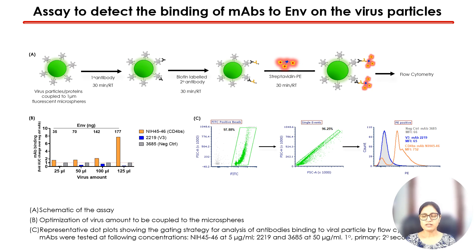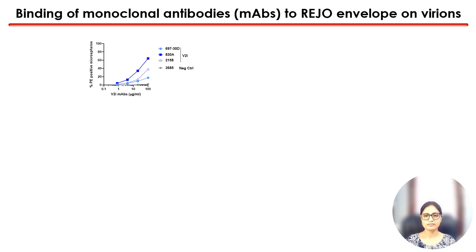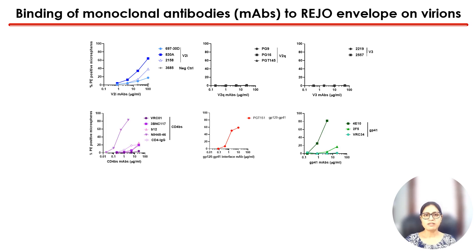At this concentration, NIH 4546 bound about 84% of the virions, while only 1.8% of particles were bound by V3 or the 3685 negative control antibody. We then used this assay to analyze the envelope epitopes present on the REGO virus particle. The non-neutralizing or weakly neutralizing antibodies showed strong binding, while the negative control 3685 showed almost no binding.